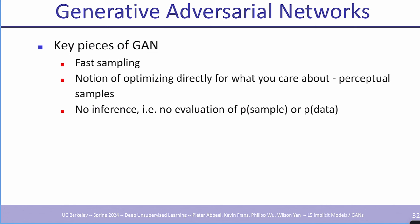Key properties of GANs: fast sampling — the generator network has no architectural constraints; directly optimize for perceptual quality of samples; but no inference — we cannot evaluate probabilities in high dimensions. When asked why we use the Inception network specifically, it was state-of-the-art at the time, and people kept using it for consistent comparisons. There are better classifiers now, but switching would require re-running all old experiments.